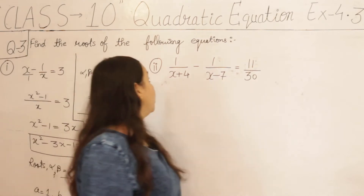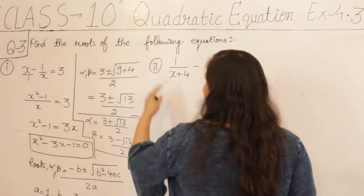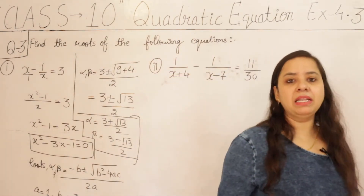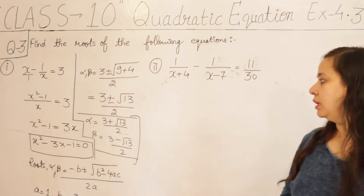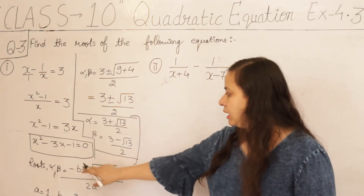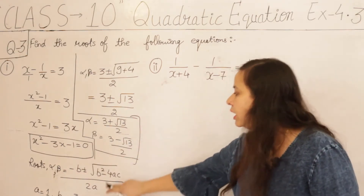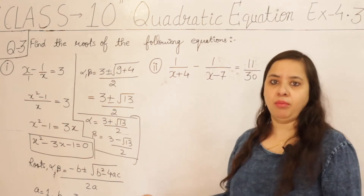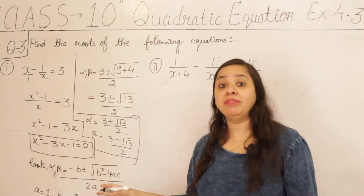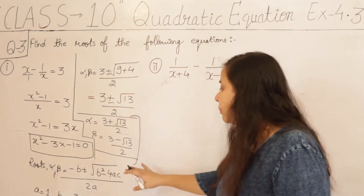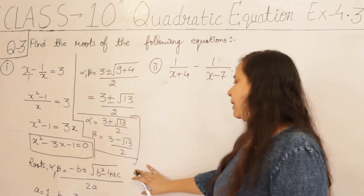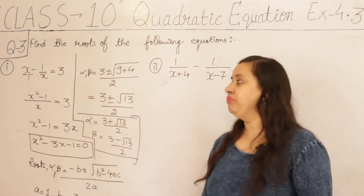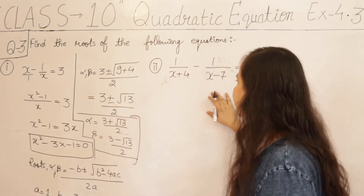So these are the answers. Alpha and beta are the roots of the given equation. We found the roots — first we simplified to get the quadratic equation, then we applied the quadratic formula method. Now we have the second equation.